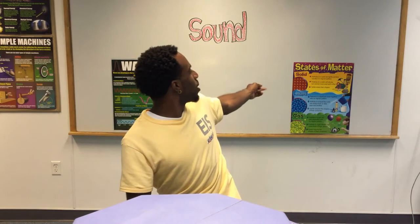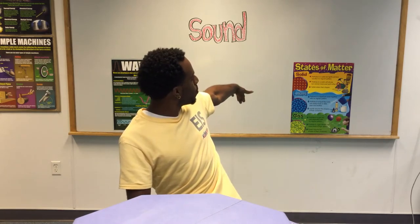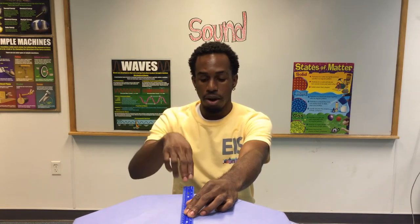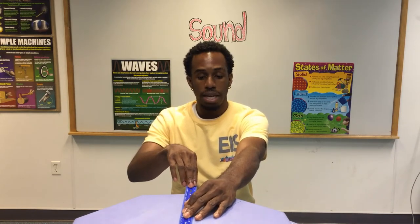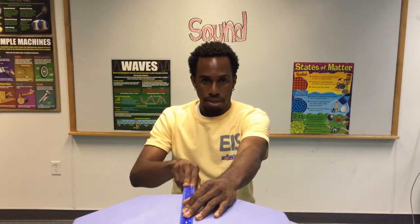Sound is a vibration that travels through a medium. For example, states of matter — we have a solid, liquid, and gas. Sound can travel through all of those states of matter. Now I want to demonstrate using a plastic ruler how sound can travel through a solid. I'm going to place my finger on the edge of the ruler and as I move the ruler towards me, I'm going to vibrate the ruler to produce the sound.